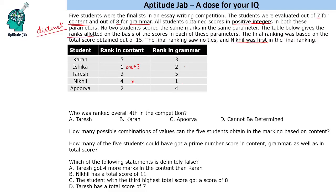Now looking at grammar: Nikhil is first and Ishika is second, meaning Ishika has at least a three-mark gap below Nikhil in grammar. For Nikhil to lead Ishika overall, he needs to gain at least four marks in grammar, since Ishika has a minimum lead of three marks in content. Since 8 is the maximum for grammar, if we put 8 for Nikhil, Ishika gets 4. The remaining grammar scores are then 3, 2, and 1, giving us 1, 2, 3, 4, and 8.